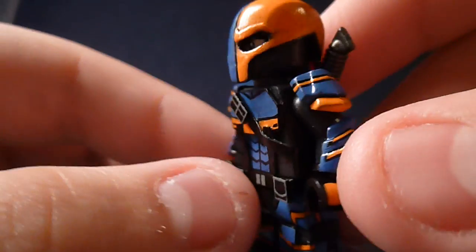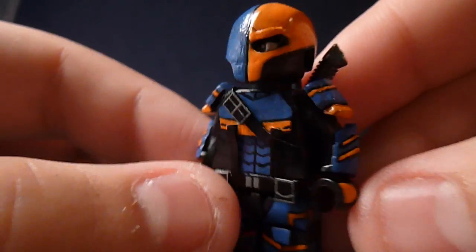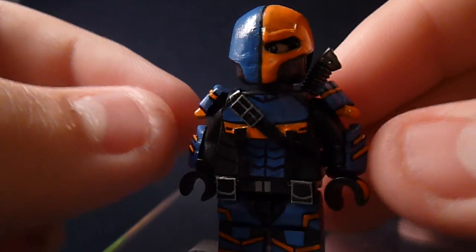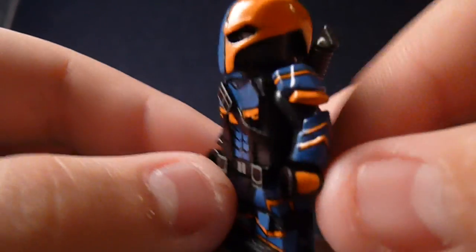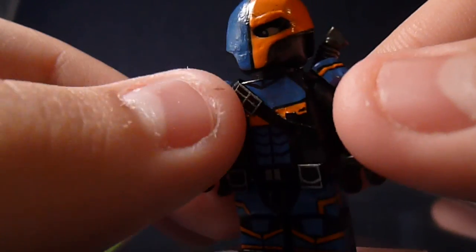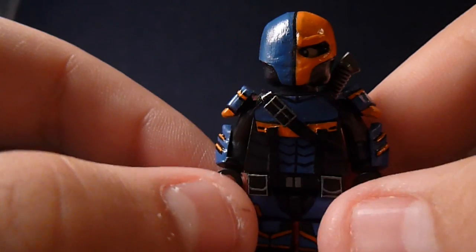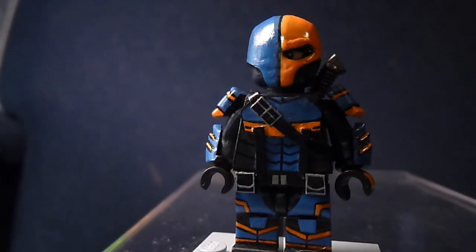His shoulder pads are brick warriors greaves and his gauntlets are brick warriors vambraces that I've painted. I painted a little orange on his hands. This little pouch here and these two pouches here are electrical tape. I'm not electrical tape, I don't know what I'm saying.